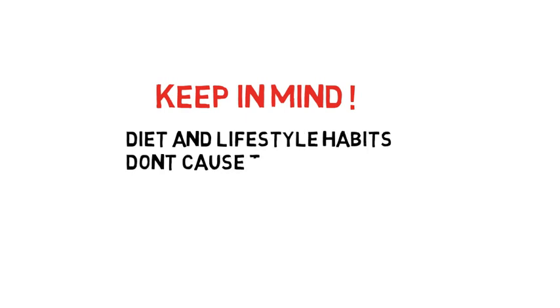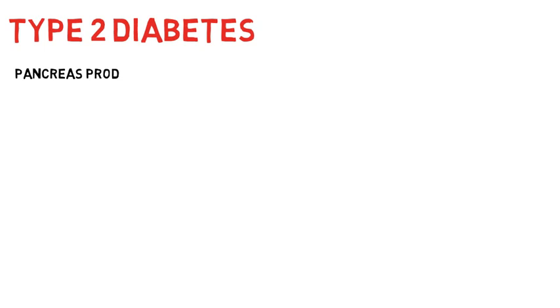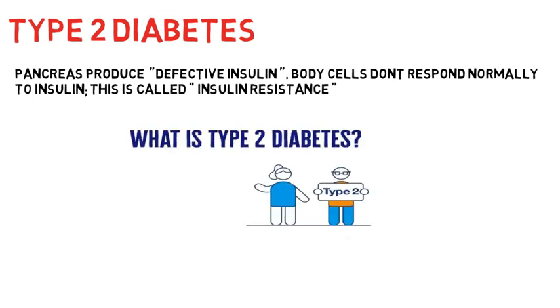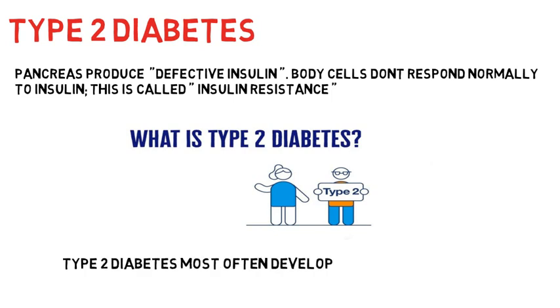Keep in mind that diet and lifestyle habits don't cause type 1 diabetes mellitus. Type 2 diabetes is when your pancreas produces defective insulin and body cells don't respond to this defective insulin — this is called insulin resistance. Type 2 diabetes often develops over the age of 45.